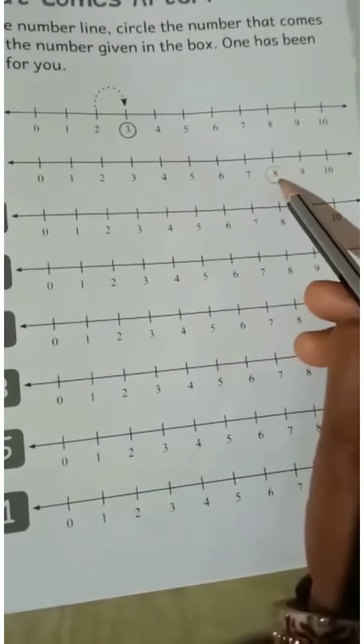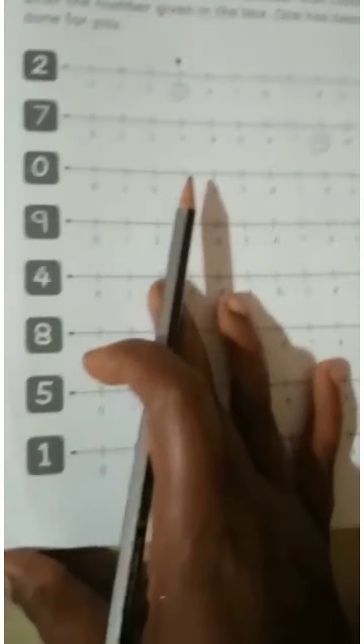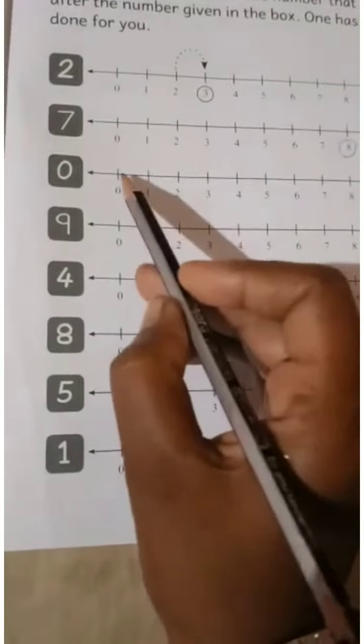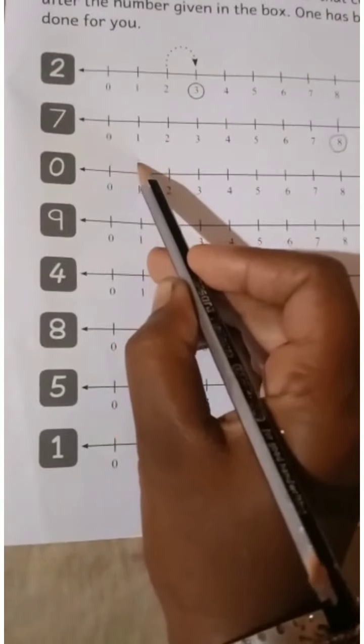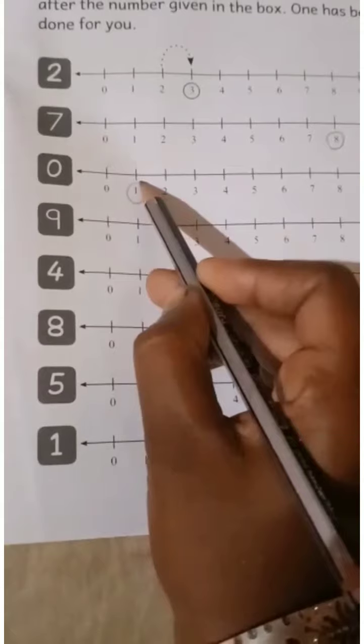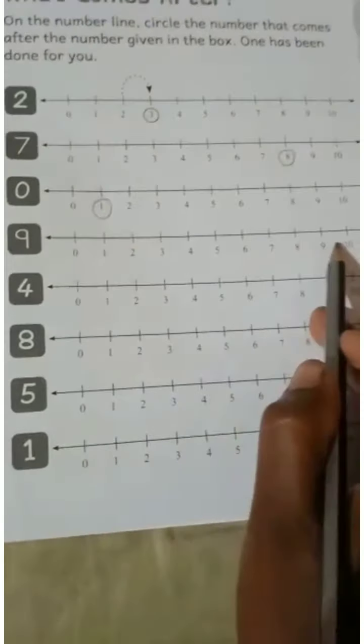Eight is in the box. Zero - what comes after 0? One. Nine - what comes after 9? Ten.